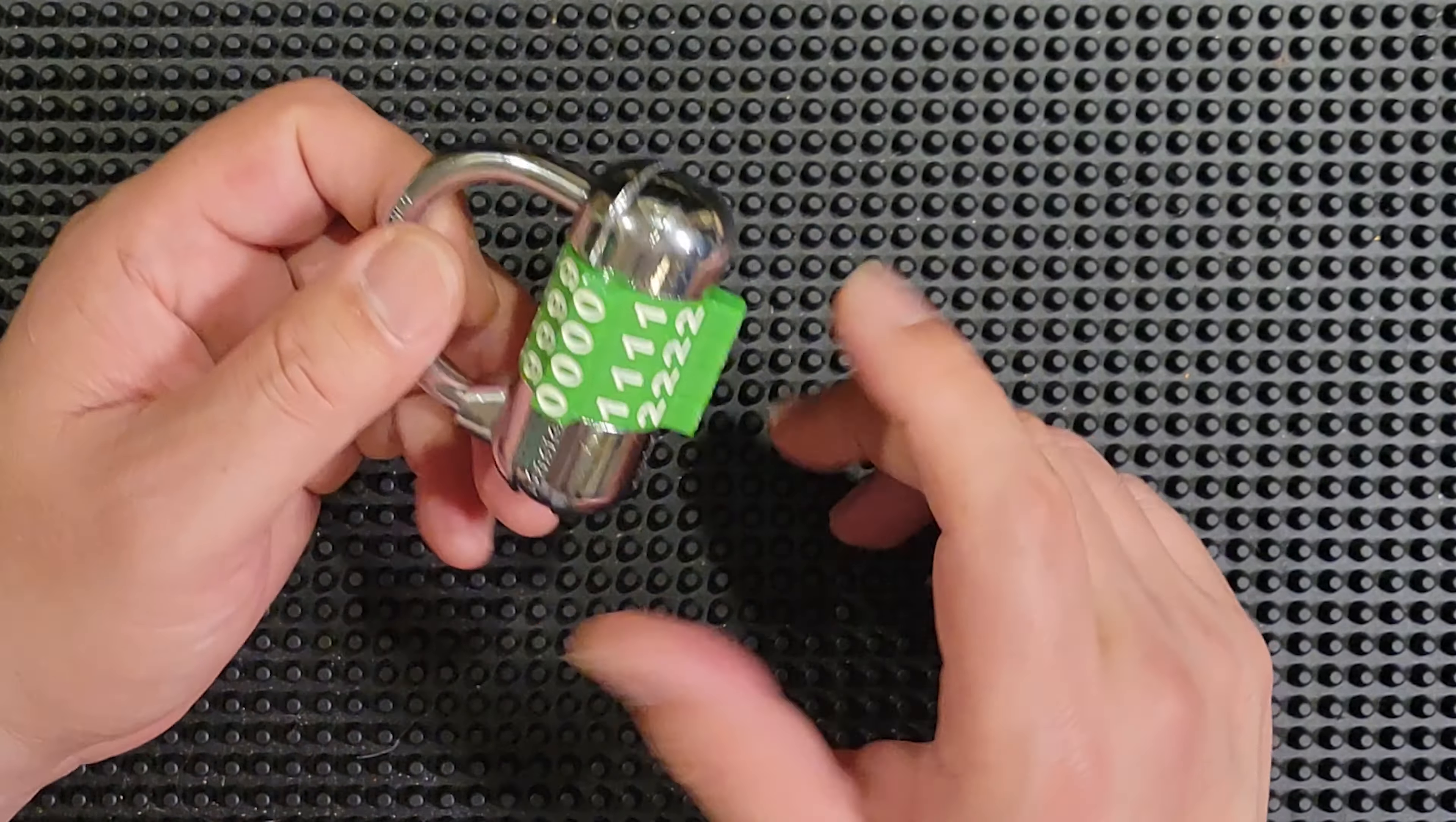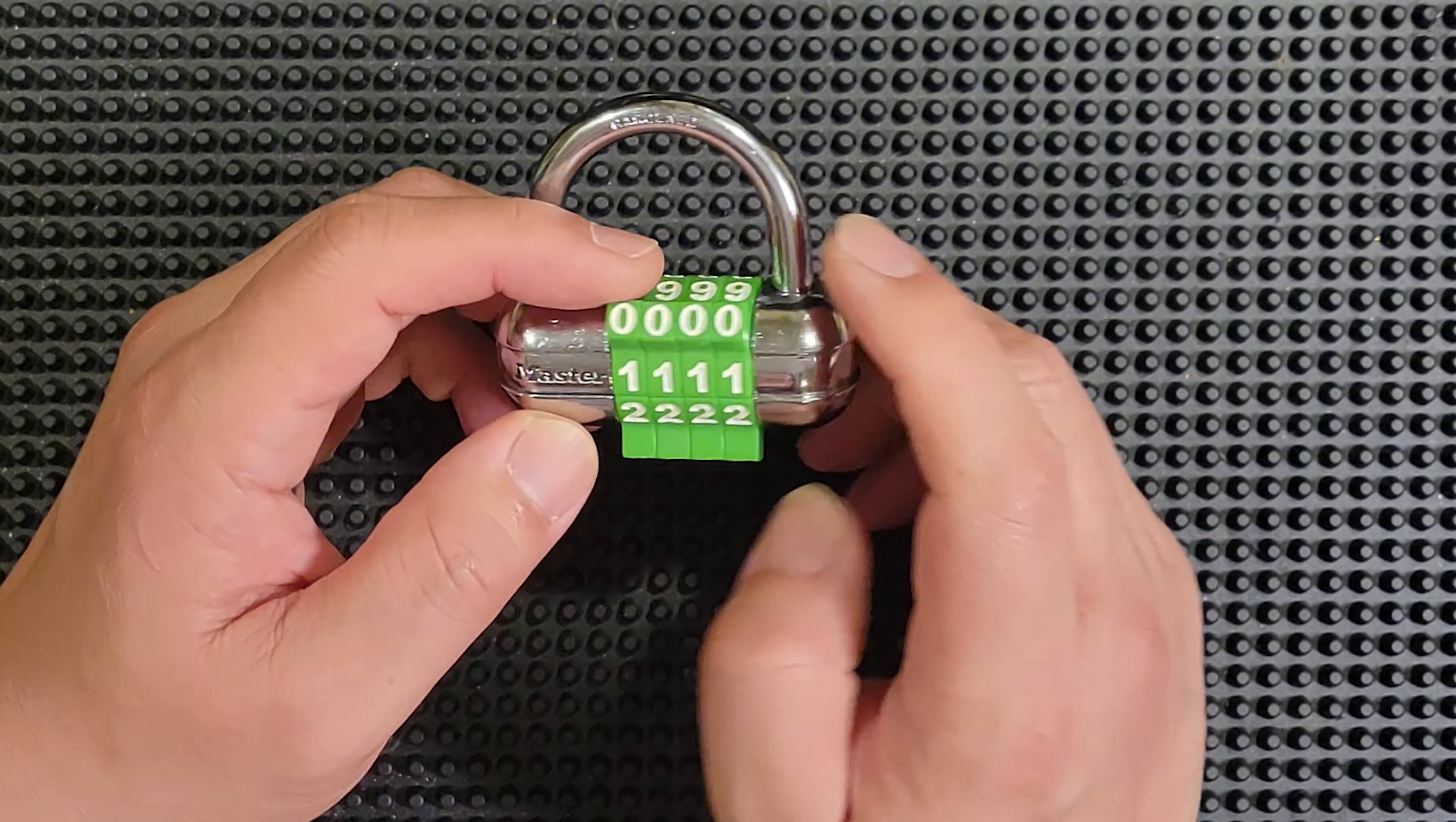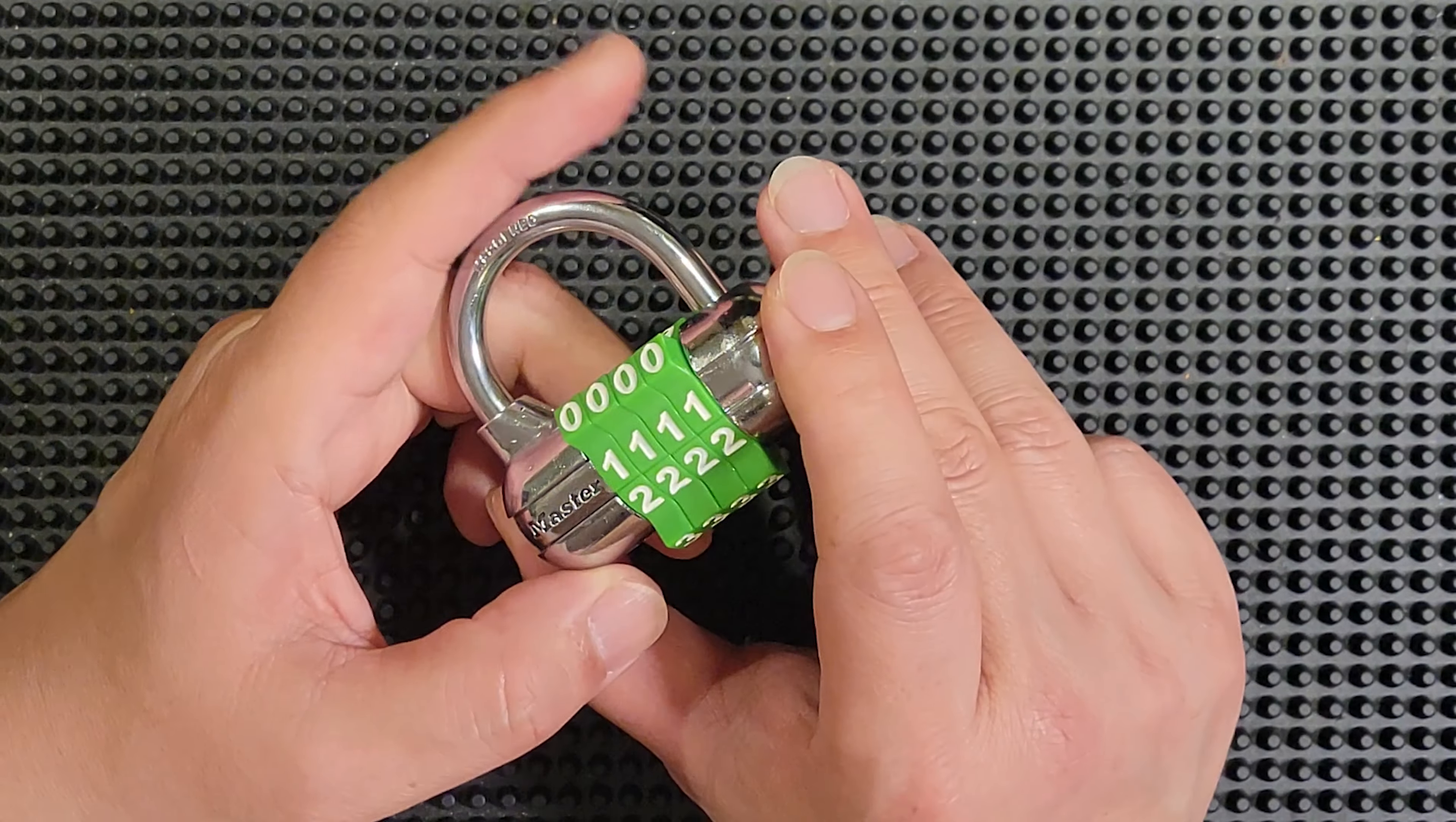So, the way you decode these is by pulling outward on the shackle and then turning the code wheels until you feel a gate. And I've opened a dozen or more of these, and I've never detected a false gate in any of them. So I can't say, because I've never gutted one of these, I can't say with full confidence that they don't have false gates, but I can say that I personally have never detected a false gate.